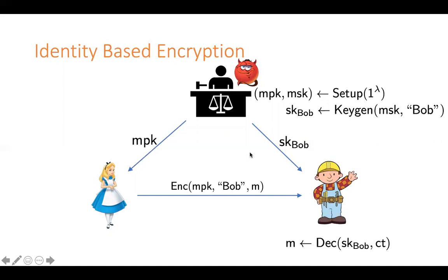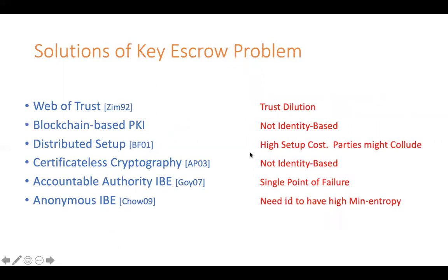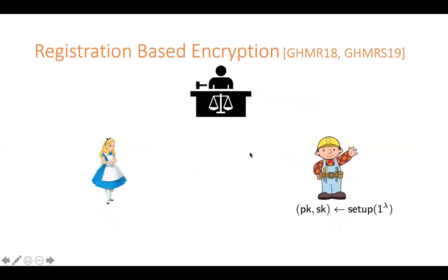The master secret key that is stored at the authority simply has so much power to it. This problem is famously called the key escrow problem. It would be great if we can have an IBE-type solution but where the authority doesn't have so much power. There have been many works towards solving the key escrow problem but each of them has their own drawbacks. Until recently, Garg and others came up with a beautiful primitive called registration-based encryption to solve the key escrow problem.